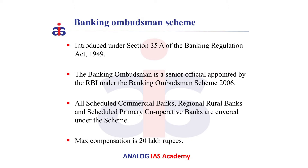All scheduled commercial banks, regional rural banks, and scheduled primary cooperative banks are covered under this scheme. The compensation for any loss suffered by the complainant is limited to an amount arising directly out of the act or omission of the bank, or 20 lakh rupees, whichever is lower.